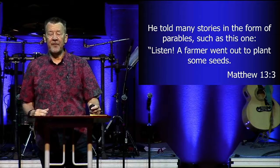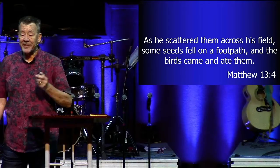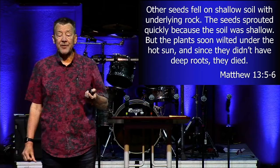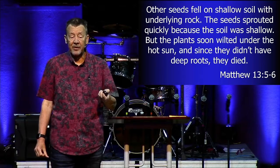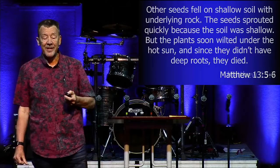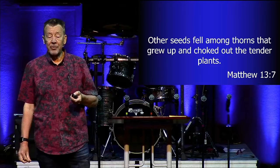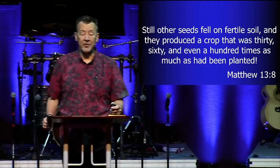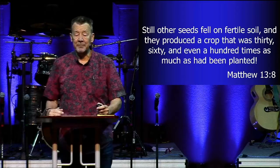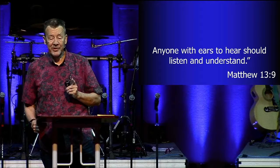A farmer went out to plant some seeds. He scattered them across his field. Some seeds fell on a footpath and the birds came and ate them. Other seeds fell on shallow soil with underlying rock and the seeds sprouted quickly because the soil was shallow, but the plants soon wilted under the hot sun. Since they didn't have deep roots, they died. Other seeds fell among thorns that grew up and choked out the tender plants. Still other seeds fell on fertile soil and produced a crop that was 30, 60, even 100 times as much as had been planted. Anyone with ears to hear should listen and understand.